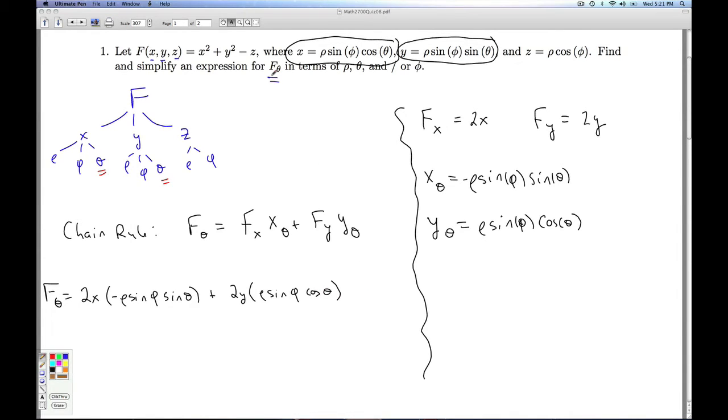Now, I want to find f_theta in terms of rho, phi, and or theta. So now I need to make substitutions for x and y. So what am I going to have here? When I substitute in the x, I'm going to get rho sine phi cosine theta. I already have a rho sine phi. So I'm going to have a negative 2 rho squared sine squared phi sine theta cosine theta.